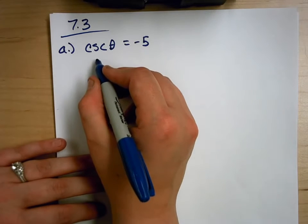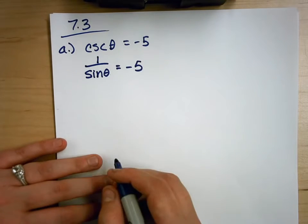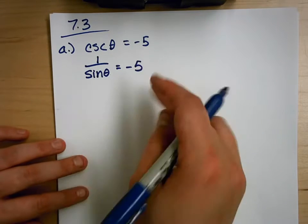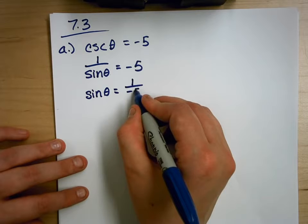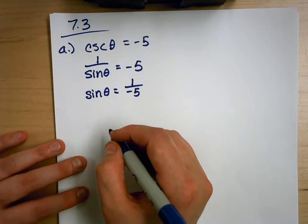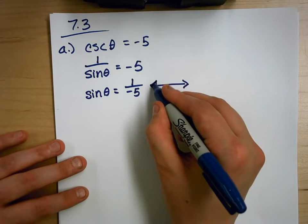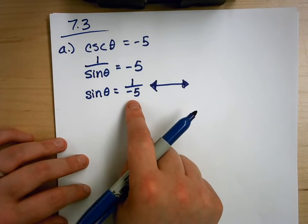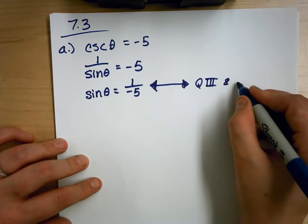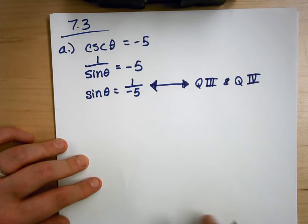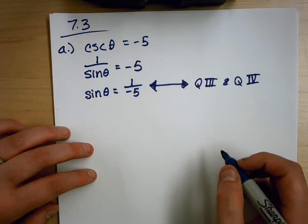Cosecant is the same as 1 over sine theta, which equals negative 5. I can flip both of them around and get that sine theta equals 1 over negative 5, which is negative one-fifth. Sine of theta equals negative one-fifth in quadrant 3 and in quadrant 4 — this is going to help me out when doing my reference angles.